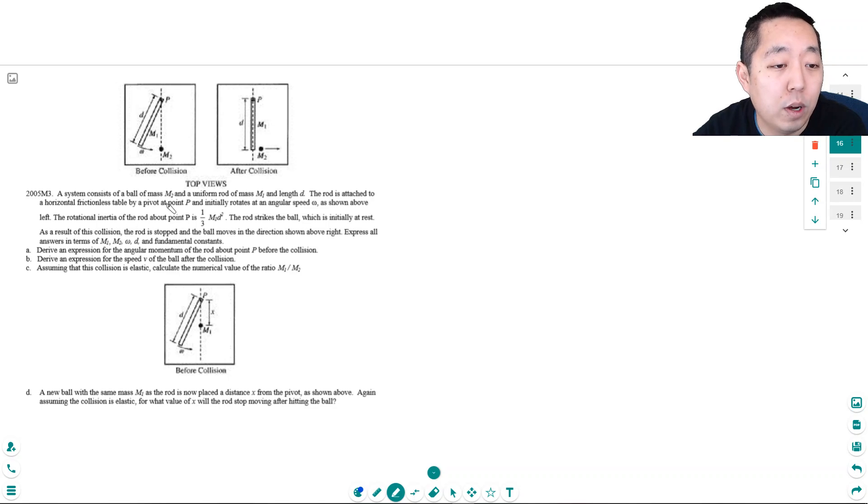So we have a system consisting of a ball of mass m2 and a uniform rod of mass m1 length d. The rod is attached to a horizontal frictionless table by a pivot p and initially rotates at an angular speed omega, as shown above. The rotational inertia of the rod about the point p is one-third m1 d squared. The rod strikes the ball, which is initially at rest. As a result of the collision, the rod is stopped, and the ball moves in the direction as shown to the right. Express all answers in terms of m1, m2, omega d, and fundamental constants.